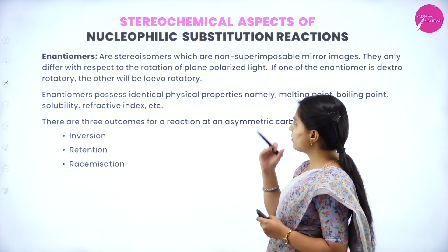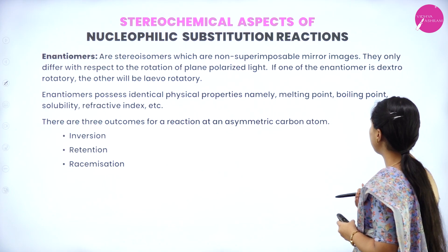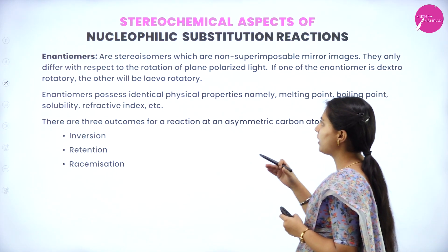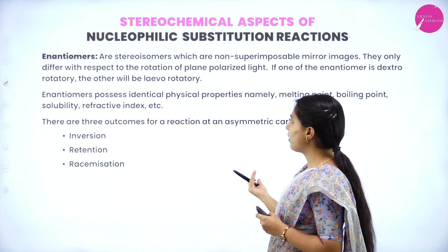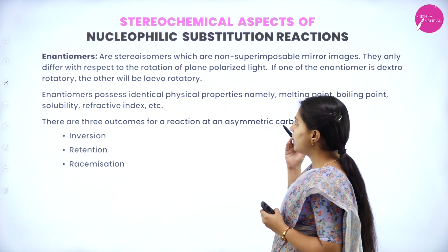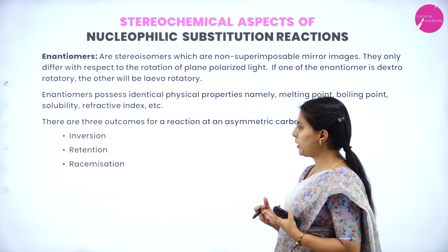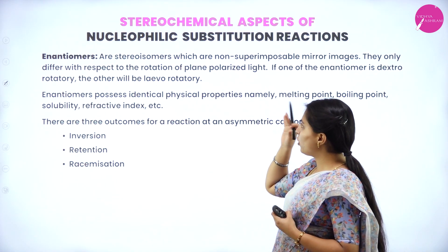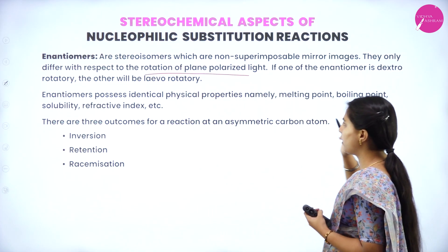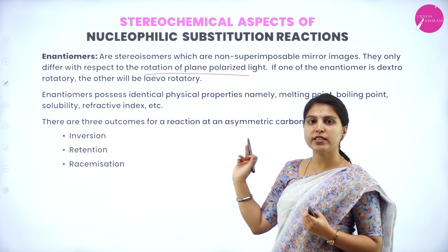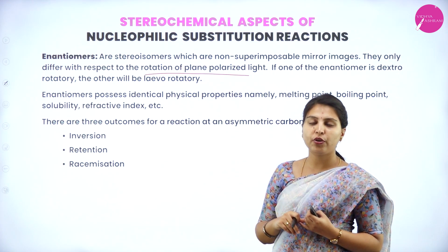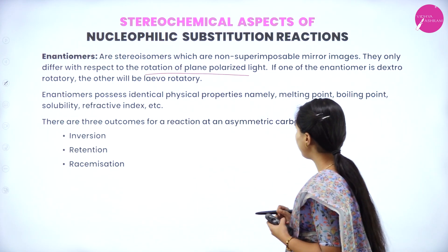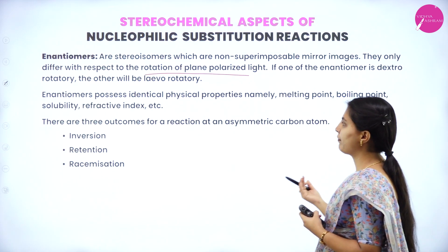Enantiomers are stereoisomers which are non-superimposable mirror images. They only differ with respect to the rotation of plane polarized light. If one of the enantiomers is dextrorotatory, the other will be levorotatory. Enantiomers possess identical physical properties — namely melting point, boiling point, solubility, refractive index, etc.